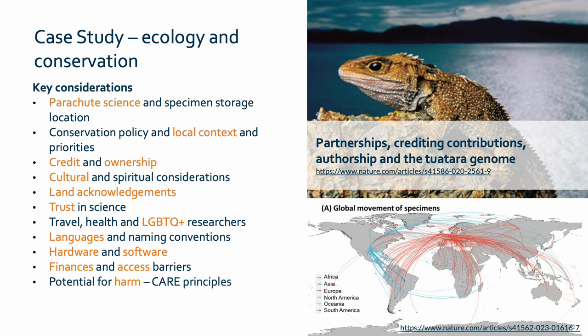Our second case study focuses on ecology and conservation. Much research in this field is conducted in poorer countries globally, yet is often done by people from wealthier English-speaking or European nations, with little credit going to those in the affected regions. Again, a key consideration is the avoidance of parachute science and instead involving local researchers and local people in the data cycle, particularly with regard to specimen storage locations. The use of local knowledge and consultation to design impactful studies and relevant policy interventions is also key for the success of conservation efforts.